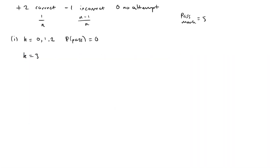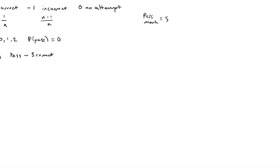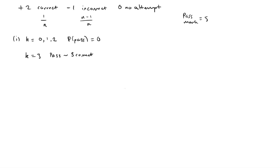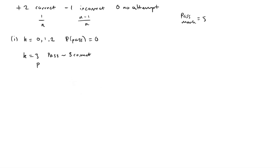When K equals three we can pass, and the pass here is equivalent to just getting all three correct — that's the only way we could do it. So given that we've chosen to answer three questions, the probability of passing the test would just be one over N cubed; we've got to get them all right.